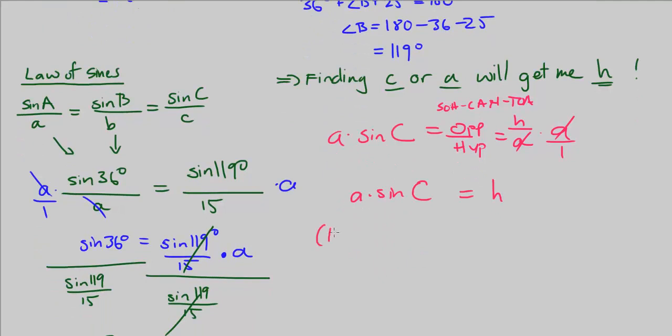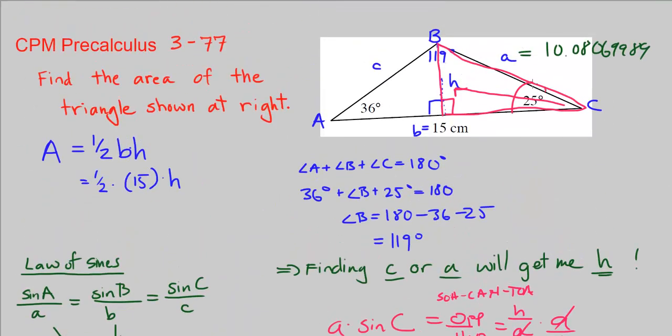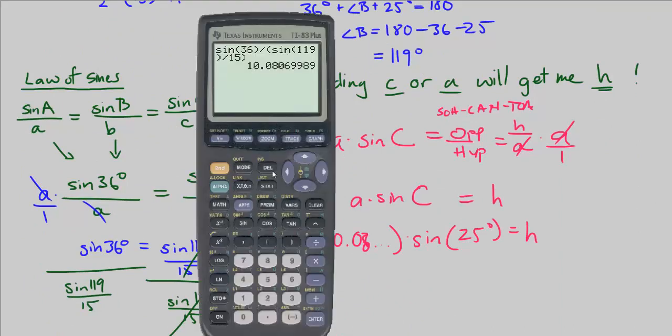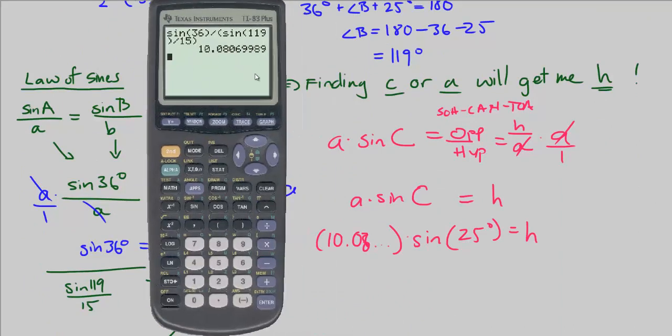A I just found was 10.08 something, it's still in my calculator, so I'm going to just leave it like that for now, times sine of angle C. Angle C is given to us as 25 degrees, equals h. Let's bring out our calculator again.